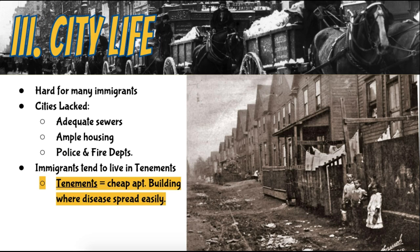Within a few years, however, the party fell apart over disagreements about slavery. Whether you were an immigrant or a native-born American, if you lived in a city at this time, city life proved challenging. Most cities lacked adequate sewer systems, police and fire departments, and even housing — and with a population boom growing out of control, it created a rough situation. Immigrants in particular tended to live in crowded tenement apartment buildings, where disease often spread rapidly. Others did prosper as middle-class business owners, but remember: a tenement is a low-rent, low-quality apartment where disease often spreads.